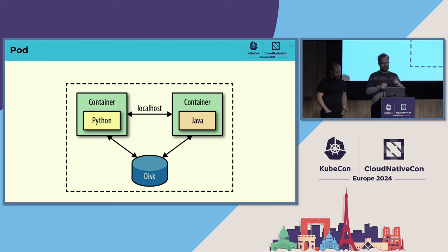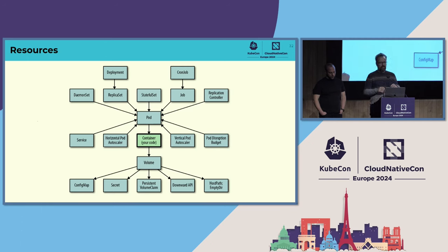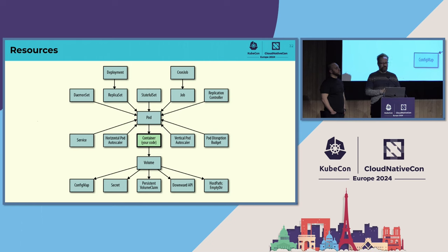Around the pod abstraction, you describe a pod with a YAML file — a resource descriptor. There are many other resources we won't go into detail on, but everything at the end goes around your code. Your code runs within a container, and you describe how it should run and how it interconnects to the outside world. That concludes our quick crash tour through Kubernetes.